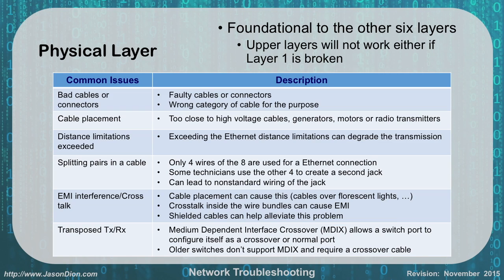Starting at the physical layer — the foundational layer. If layer 1 is broken, none of the other layers are going to work. Common issues include bad cables and connectors — are they faulty, or is the wrong category of cable being used for the purpose? Using a cat3 cable in a cat6 environment or running it over fluorescent lights can cause EMI. In high EMI environments you may want to use fiber cables. Cable placement matters too — cables placed too close to high voltage cables, generators, motors, or radio transmitters can cause EMI. Move those cables or replace them with fiber.